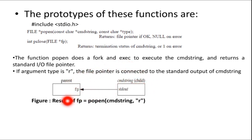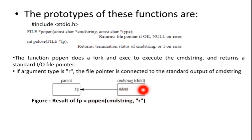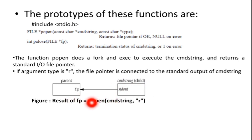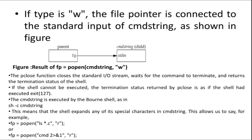For example: result_fp = popen(command_string, "r") — that means you can read from the standard output of the command string. This is the syntax when you are opening and reading from a pipe.